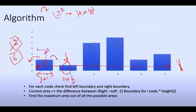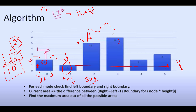Next, height is 5. It stretches 2 units in total width, giving 5 × 2 = 10. This is better than the previous answer, so the answer gets updated to 10. For height 6, there is a lower height immediately on both sides, so the span is only 1 unit. Area = 6 × 1 = 6, which is lower than 10, so we skip it.